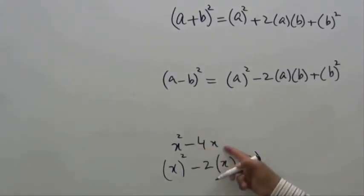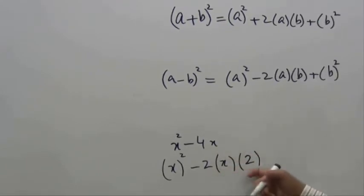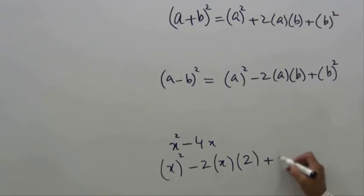If you simplify this, two times two is four times x, so you get this back by this breakup. Now we can see that the second term is two, and we need to complete the square is two squared.